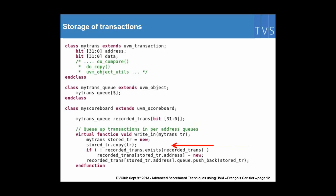The write-in method can then implement the storage of the transaction. To be safe, we copy this transaction, check whether or not the address exists already, and then we just push the transaction at the end of the queue.